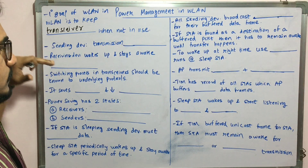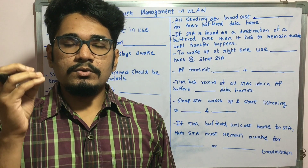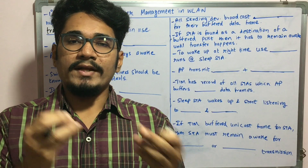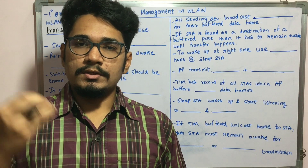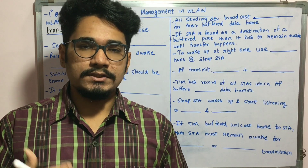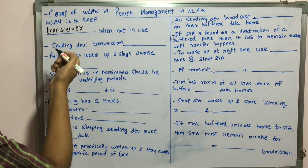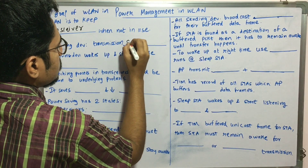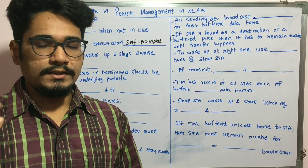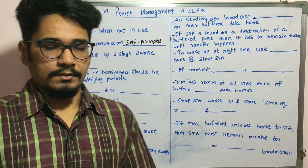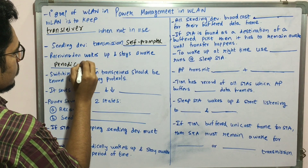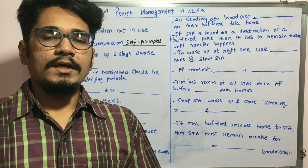Consider this example: you have a shopkeeper and there are some customers. Those customers come at random times — there is no fixed schedule for when a customer will come to the shop. But the shopkeeper must physically remain at that place, stay awake, and be present at all times so that customers can be served properly. Similarly, the sending device transmits in a self-prompted fashion, while the receiving device wakes up and stays awake periodically.